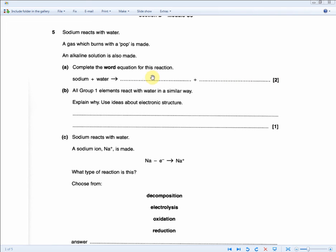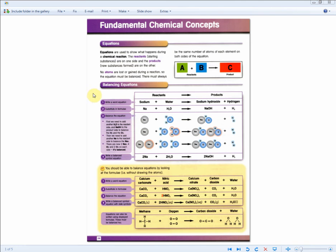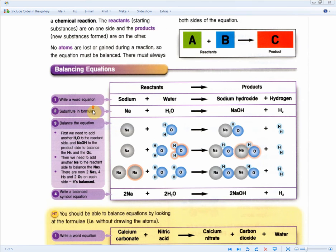For two marks, you have to fill in two blank spaces, one mark for each blank space. They're basically asking you to recall the information from the same part of the revision guide that we just seen, where you're told that the word equation is sodium plus water equals sodium hydroxide and hydrogen. To get the two marks, you've got to write in sodium hydroxide and hydrogen.